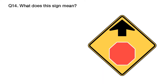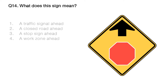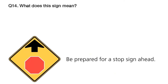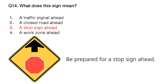Question: what does this sign mean? Option number 1: a traffic signal ahead. Option number 2: a closed road ahead. Option number 3: a stop sign ahead. Option number 4: a work zone ahead. The answer is option number 3: a stop sign ahead. Be prepared for a stop sign ahead.